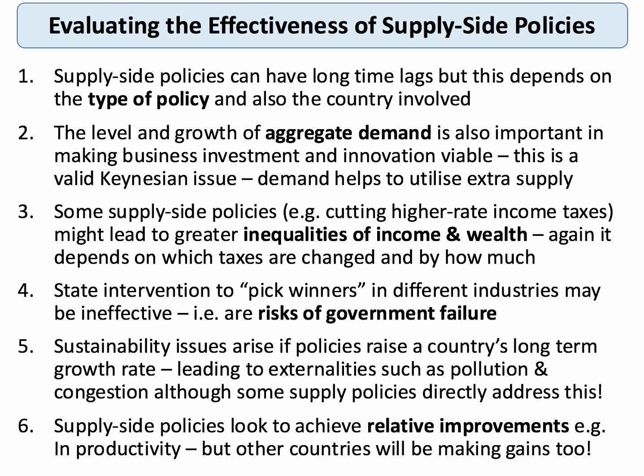Some supply-side policies might cause a negative trade-off with other objectives. For example, cutting top-rate taxes or wealth taxes might worsen inequality. It depends on which taxes are changed, by how much, and who the winners and losers are. In micro, you will have covered government failure — and oftentimes state intervention to pick winning industries or firms is often ineffective. Critics of intervention argue that governments are not very good at picking potential winners.